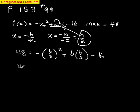So we're going to get 48 equals negative b squared over 4 plus b squared over 2 minus 16. And see what all I've done is I've found the max value and I've put it in for the x's.